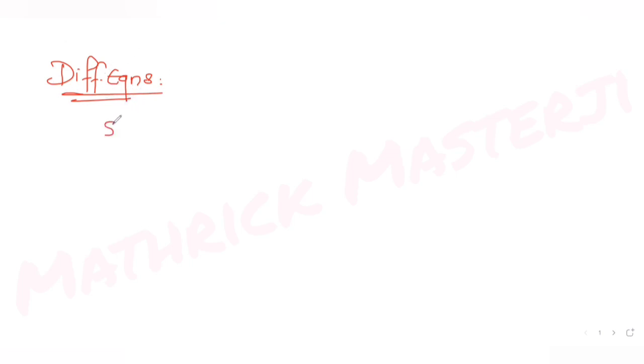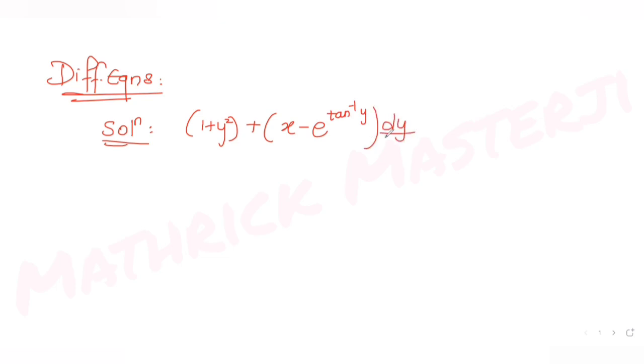Today's question is from the topic of differential equations. We need to find the solution of the differential equation given as: (1 + y²)(x − e^(tan⁻¹y)) dy/dx = 0.